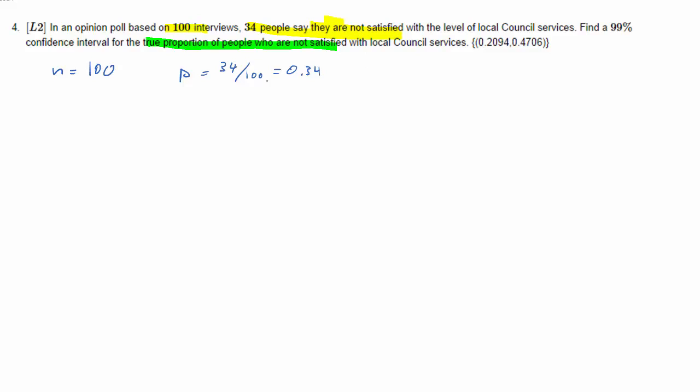We are after the true proportion of people who are not satisfied, and we shall label that π. That is unknown, and for this we want a confidence interval.